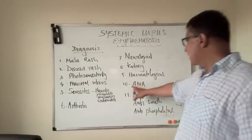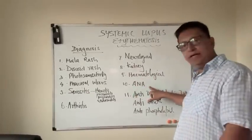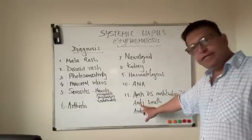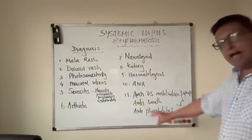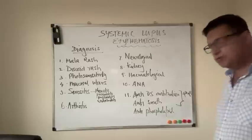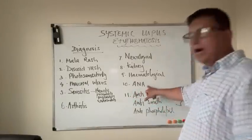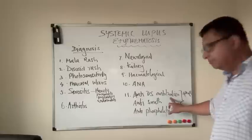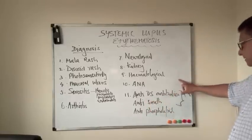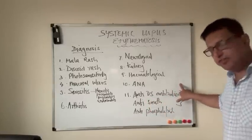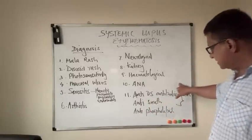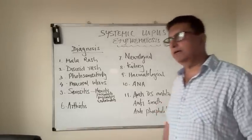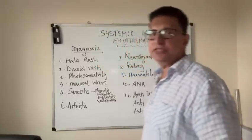There are specific antibodies: anti-nuclear antibodies, anti-double-stranded DNA antibodies, anti-Smith antibodies, and anti-phospholipid antibodies. Anti-nuclear antibodies are more sensitive, but anti-double-stranded DNA and anti-Smith antibodies are more specific for SLE. Anti-phospholipid antibodies are not specific and can be found in other conditions as well.